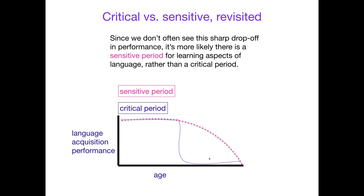If you start learning a little later, you're a little less native-like. If you start learning even later, you're not really native-like — but it's a smooth drop-off. That's the difference between a sensitive period versus what happens if you miss a critical period.